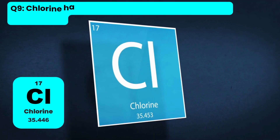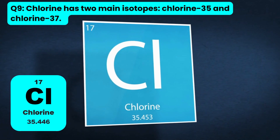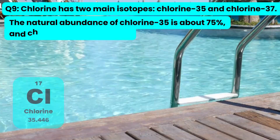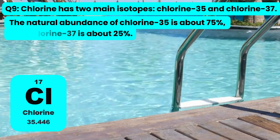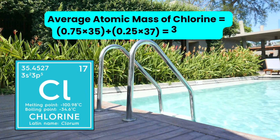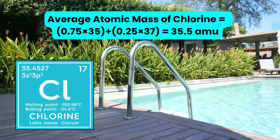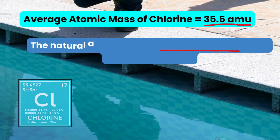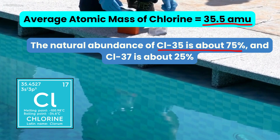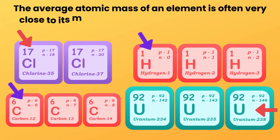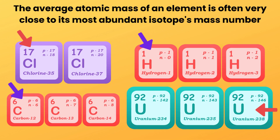Question 9: Chlorine has two main isotopes — chlorine-35 and chlorine-37. The natural abundance of chlorine-35 is about 75% and chlorine-37 is about 25%. Calculate its average atomic mass. Average atomic mass of chlorine equals 0.75×35 plus 0.25×37, which equals 35.5 AMU. Chlorine has an average atomic mass of 35.5 AMU. We can see that the average atomic mass of an element is often very close to its most abundant isotope's mass number.